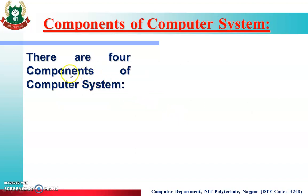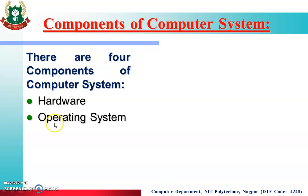Now, components of a computer system. There are four basic components of a computer system. The first one is hardware — this is the main component and is the physical part of our computer system. The second component is the operating system, which is the most important component in the computer system. Without an operating system, our computer system is incomplete.